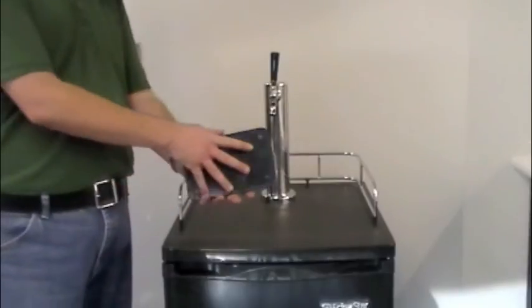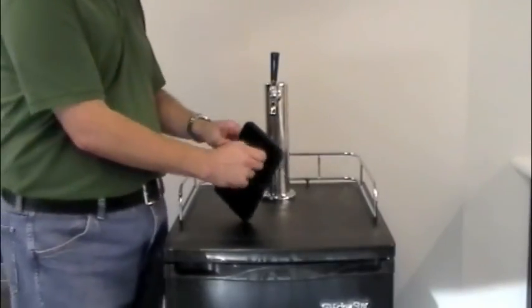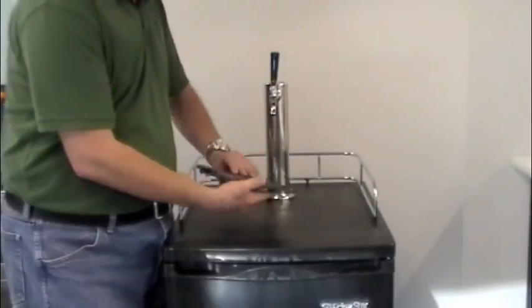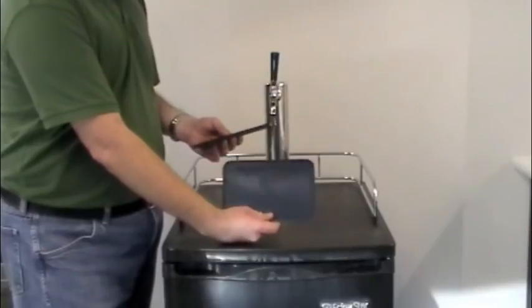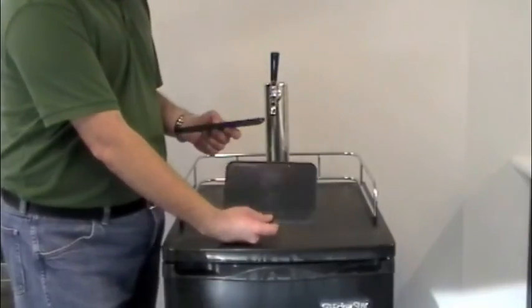That's on. And then of course we have our little drip tray and the drip tray comes apart into two pieces. There we go. So these are all washable. You're going to want to wash this. You're going to get beer in there, it's going to get funky if you don't, so make sure you wash it.